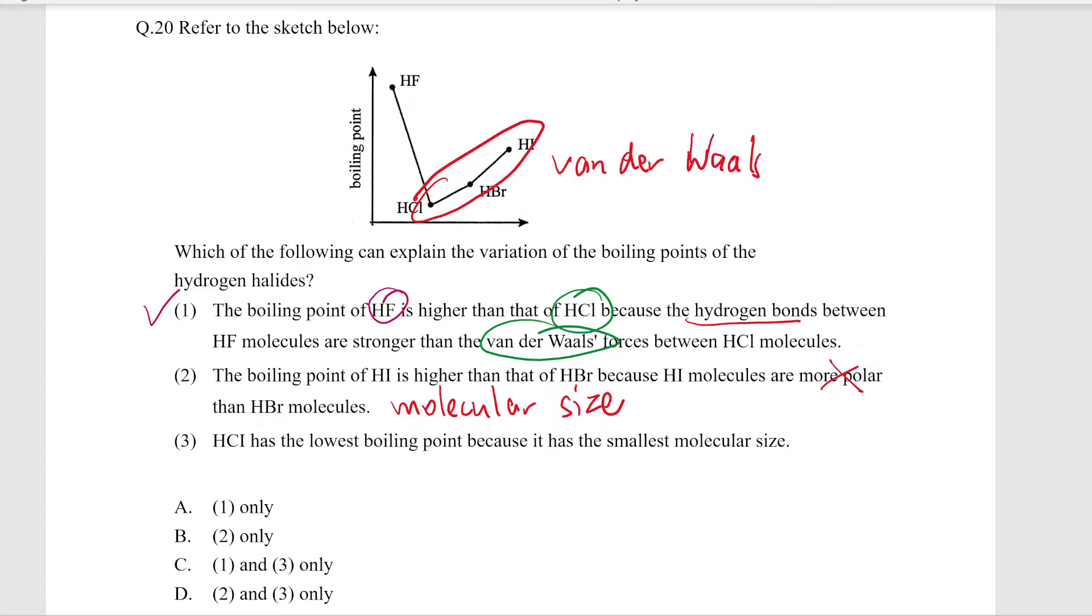That's why they are having these types of boiling points. HF is the exception, which we already noted—it has hydrogen bonding, that's why it's sticking out from these other three.